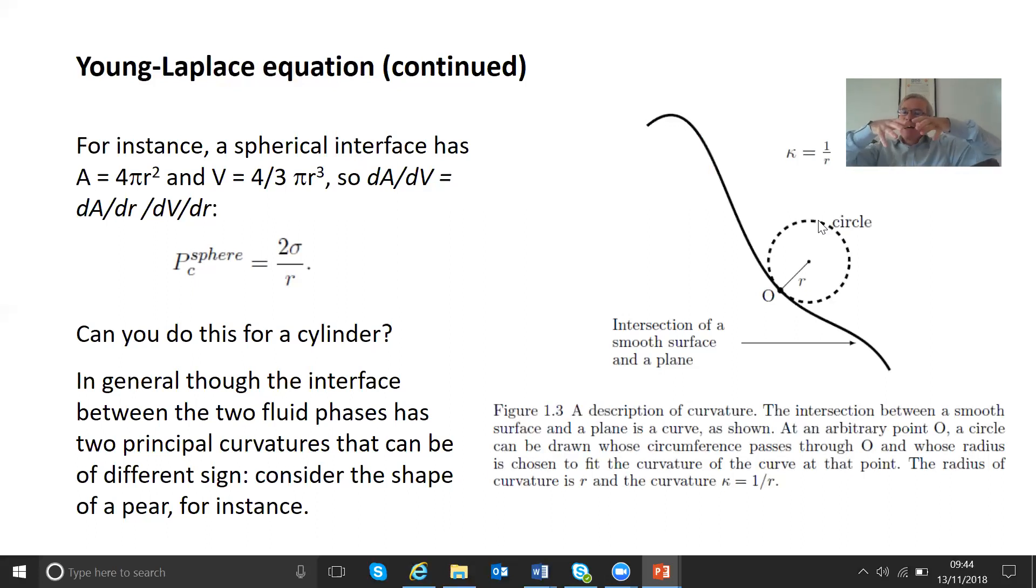So if you imagine one phase displacing another, and you have an interface between them that has the shape of a sphere, then the pressure difference between them will be 2σ divided by the radius of curvature of that sphere.